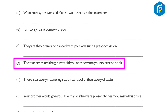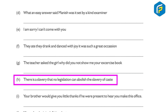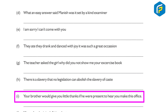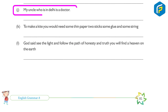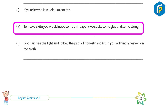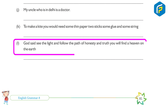G — The teacher asked the girl, 'Why did you not show me your exercise book?' H — There is a slavery that no legislation can abolish — the slavery of caste. I — Your brother would give you little thanks if he were present to hear you make this offer. J — My uncle, who is in Delhi, is a doctor. K — To make a kite, you would need some thin paper, some glue, and some string. L — God said, 'See the light and follow the path of honesty and truth; you will find heaven on earth.'